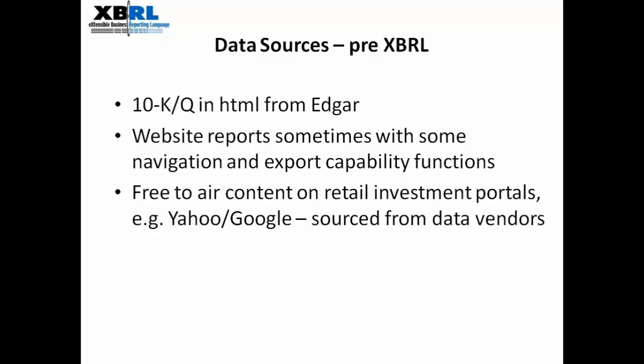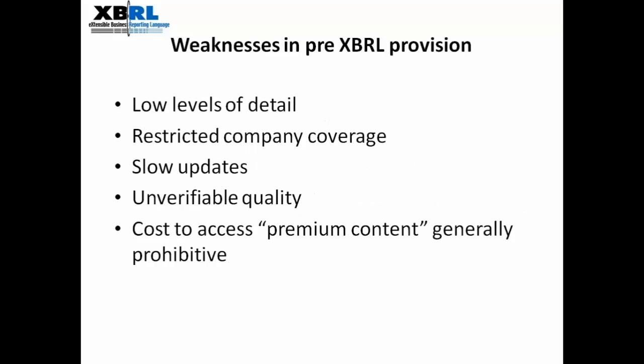So before XBRL came along — and I'm looking at the US SEC data here — what was available to retail investors? They could pick up the 10K or 10Q in HTML format from Edgar. They could also go to a company's website and maybe look at a report with better navigation and perhaps even get the financial statements exported directly into Excel. That's great for looking at individual companies, but if you're going to do any kind of serious form of analysis, you're going to need to compare the company you're interested in against others. And that's where retail investment portals like Yahoo or Google come in, which are free, and the data is invariably sourced from third party data vendors.